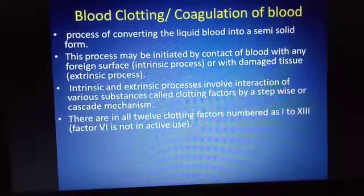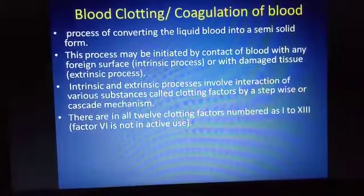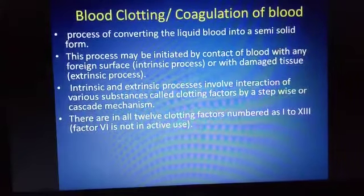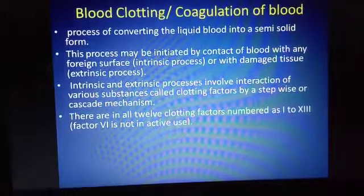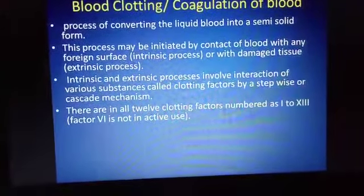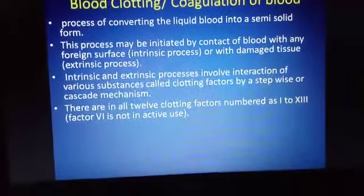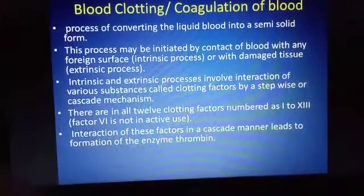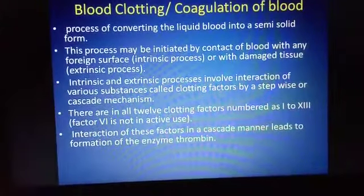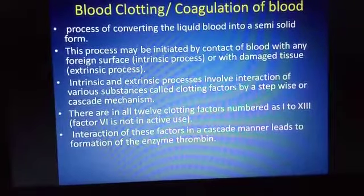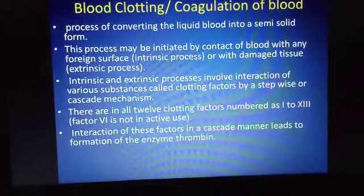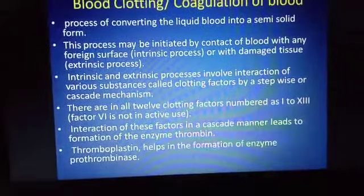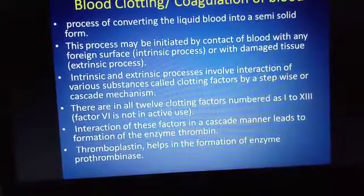There are about 12 different blood clotting factors that help in the mechanism of blood coagulation. Out of these 12 factors, the 6th factor is not in active use during blood coagulation. Interaction of these factors in a stepwise, cascade manner leads to the formation of the enzyme called thrombin, which is mainly responsible for blood coagulation.